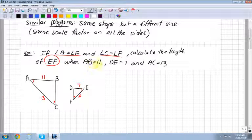When AB is equal to 11, so I look for AB, there's AB equal to 11. DE, which is on the smaller triangle, is equal to 7. And AC, which is that big long side, is equal to 13.